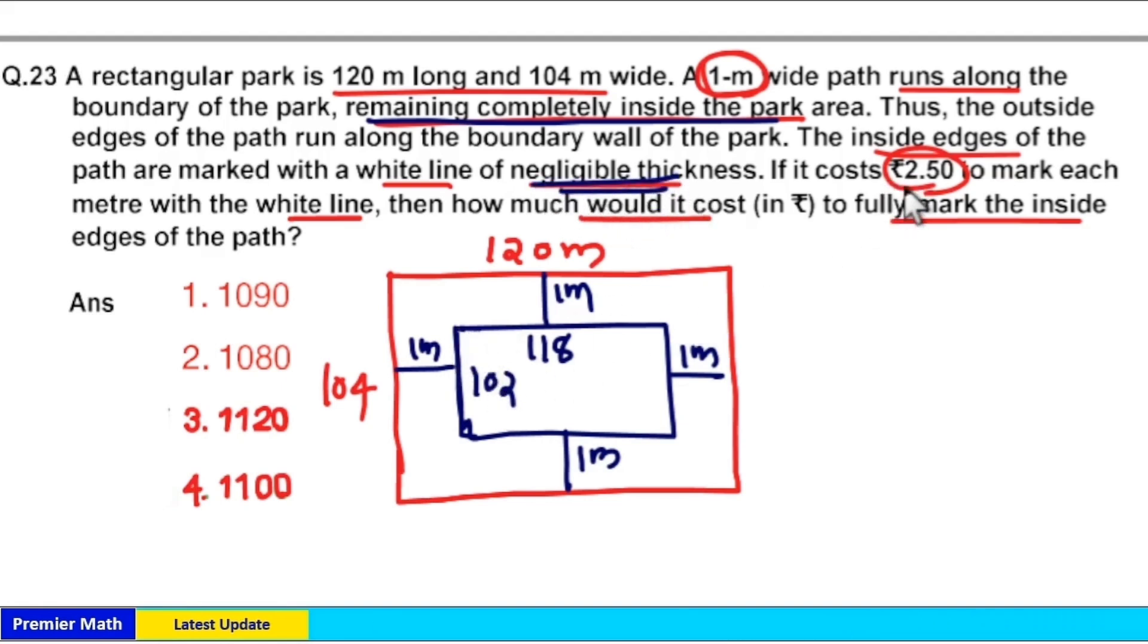We can ignore it. Then, cost of marking 1 meter is equal to Rs 2.5. Then, cost of marking the inside edge of this path is equal to 2.5 into the perimeter.